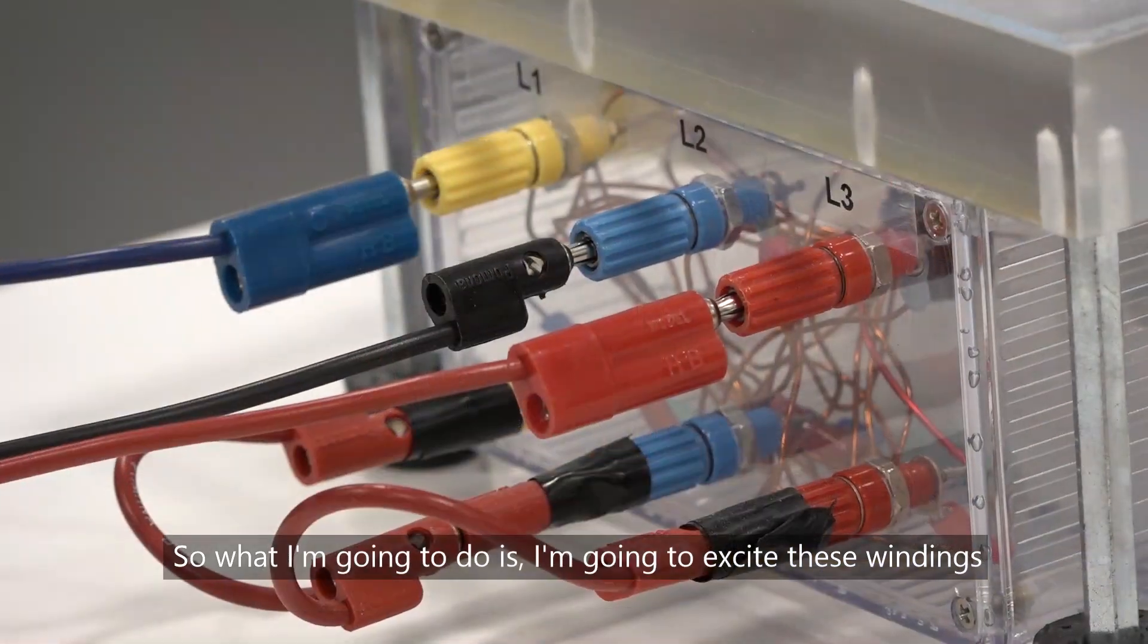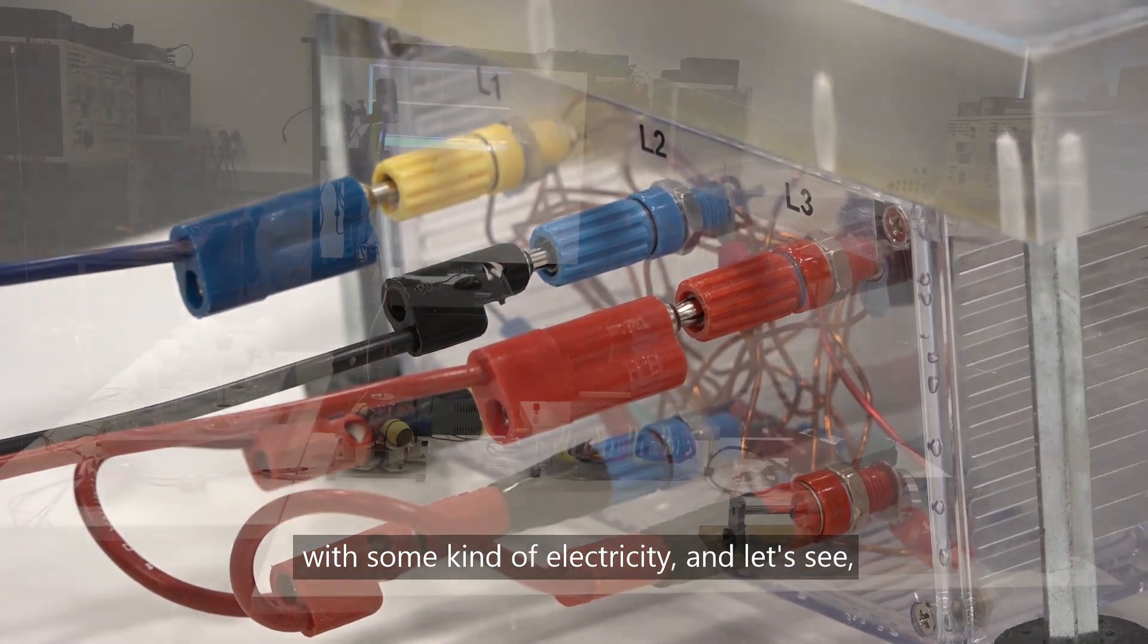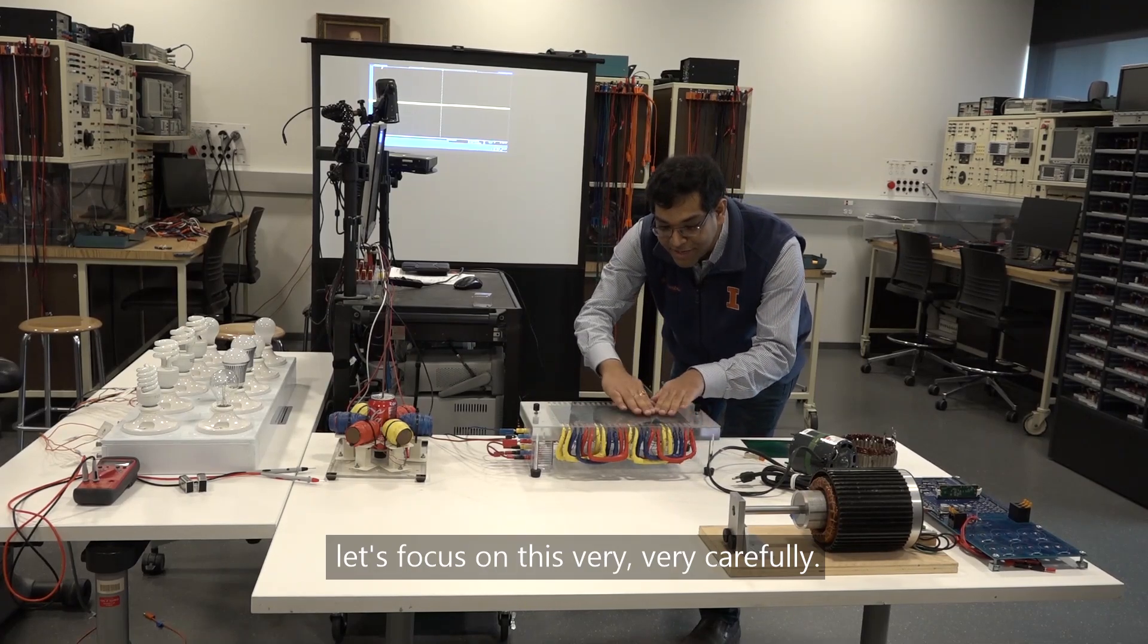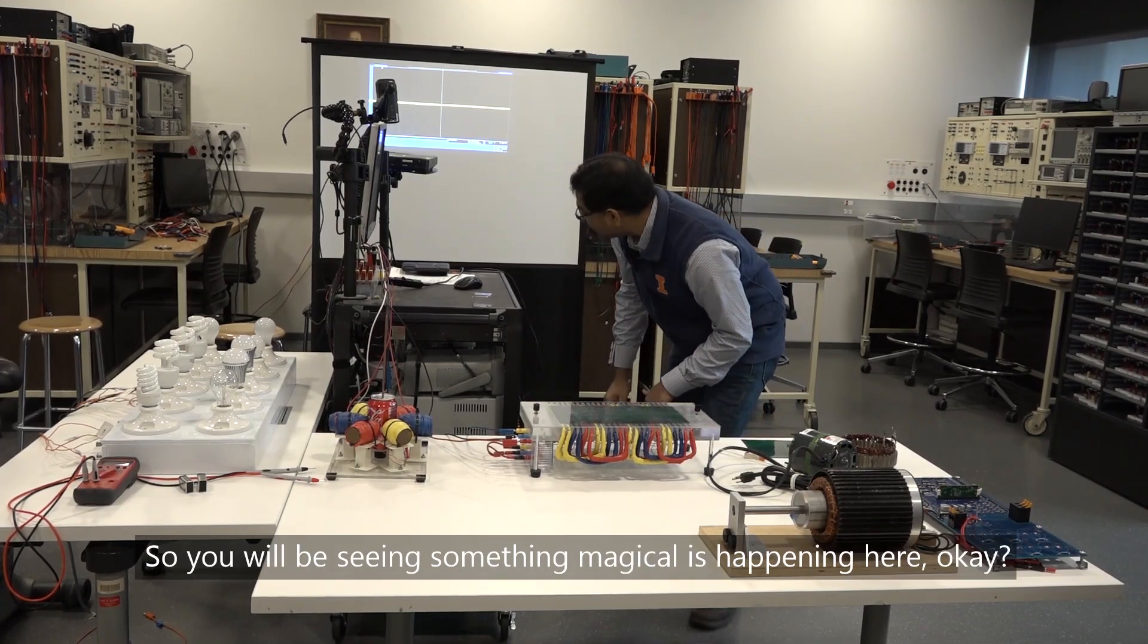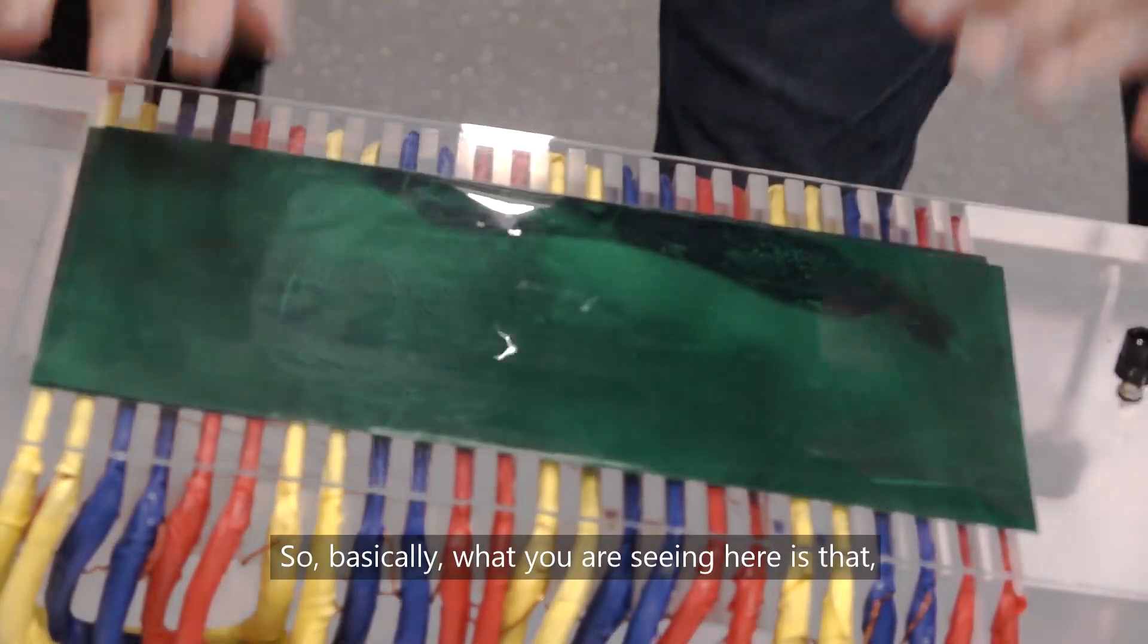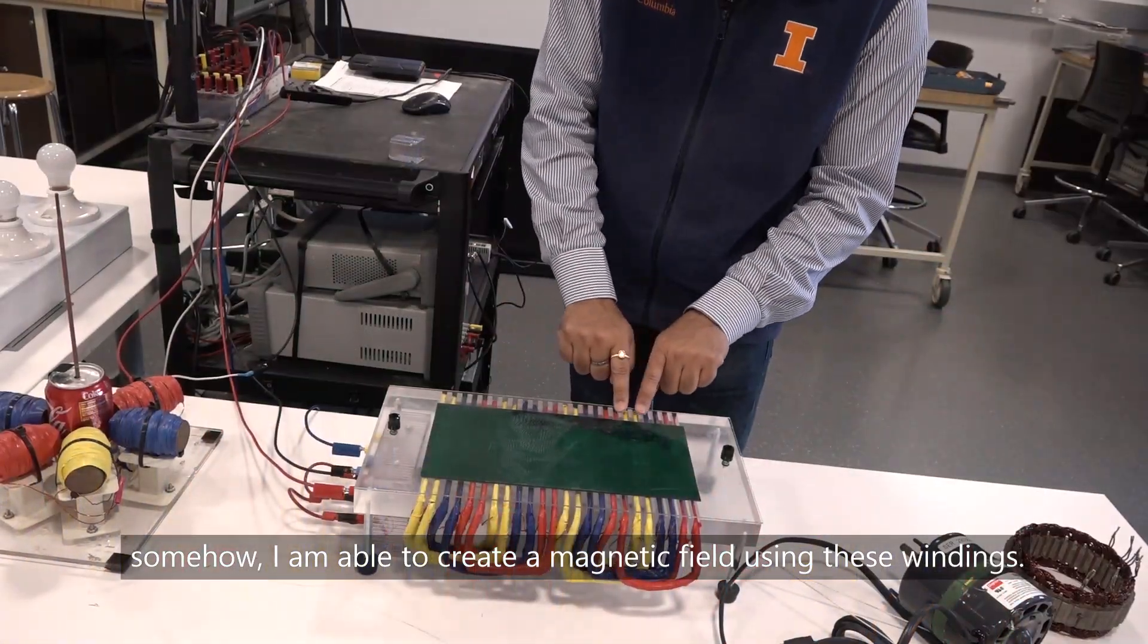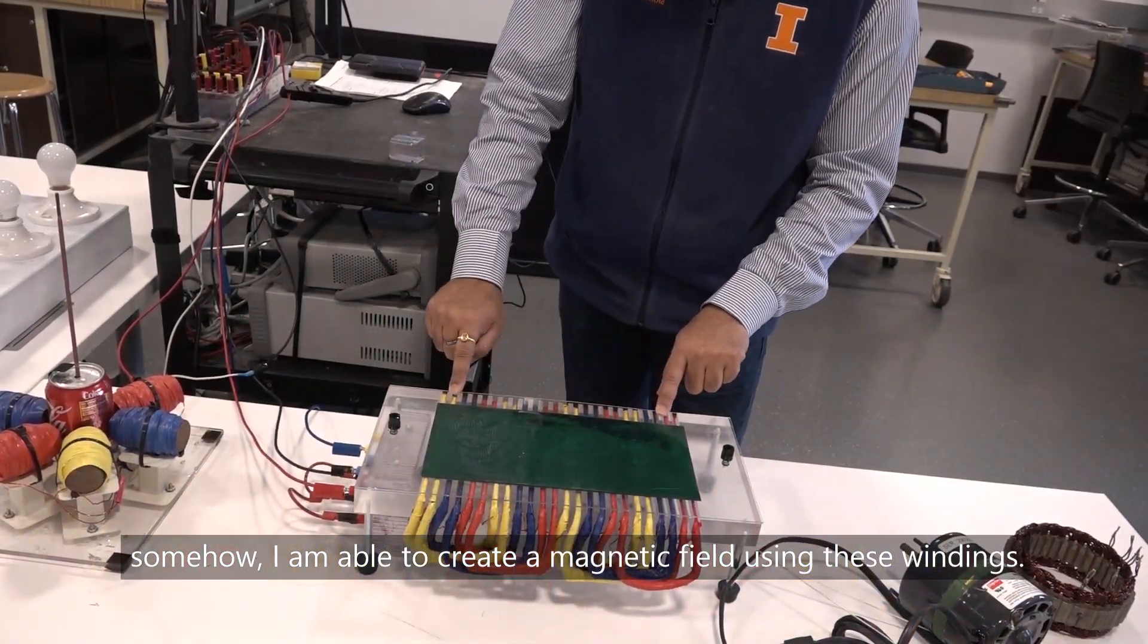What I'm going to do is excite these windings with some kind of electricity. Let's focus on this very carefully. You will be seeing something magic happening here. Let's try this out. So basically what you're seeing here is that I am able to create a magnetic field using these windings.